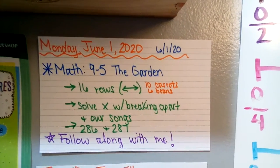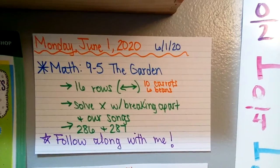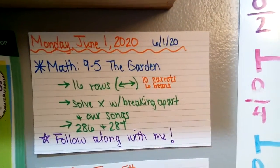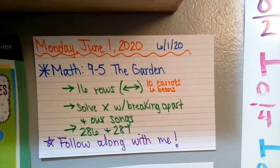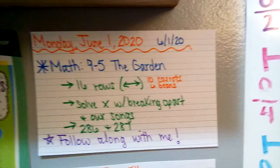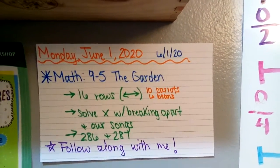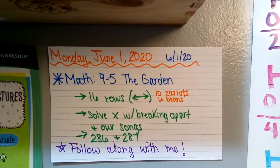Okay guys, it's June 1st, Monday. I can't believe it. Today for math we are working on lesson 9-5, and it's about Jonah's garden. We're gonna use a grid to decide how this guy plants his garden. So meet me on page 286, and we're gonna solve it by breaking apart multiplication stuff and singing our songs.